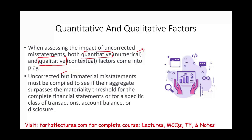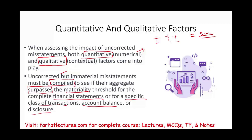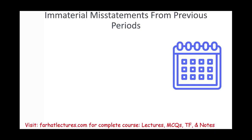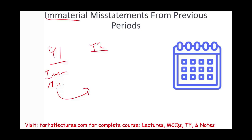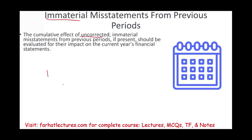It's not only the current year we look at — we also look at immaterial misstatements from the prior year. If we're doing year one and found some immaterial misstatements that were not corrected, those may carry forward into year two. We have to account for that and add them to the current period. The cumulative effect of uncorrected immaterial misstatements from the prior year, if present, should be evaluated for their impact on the current financial statements.